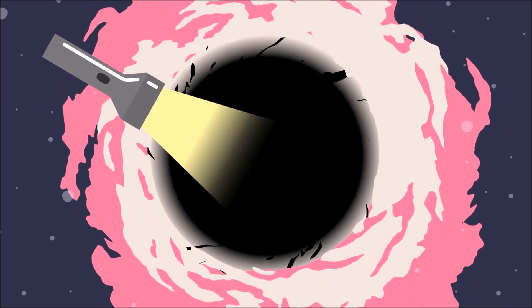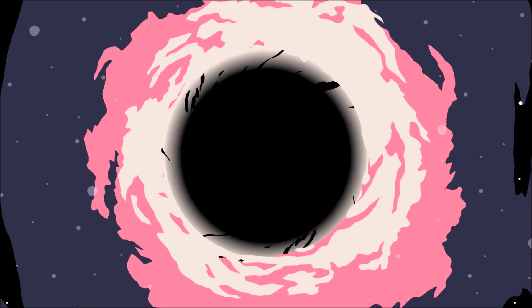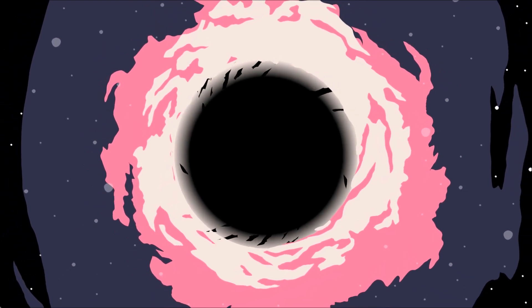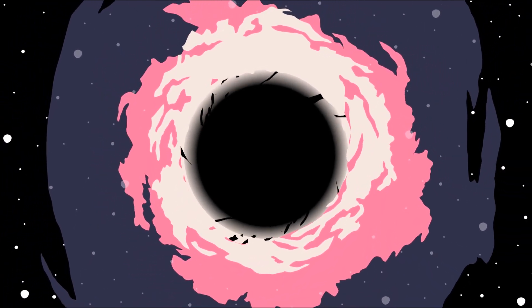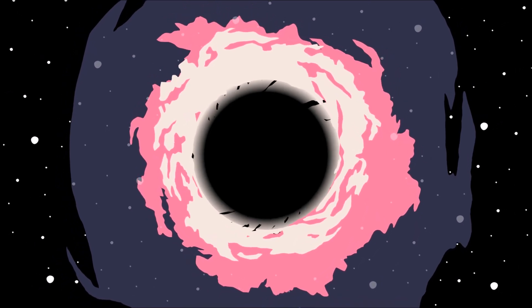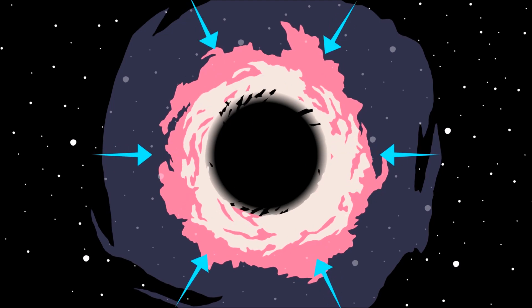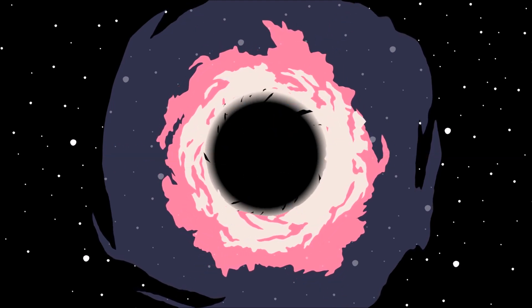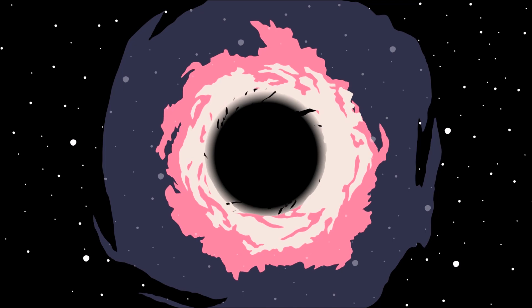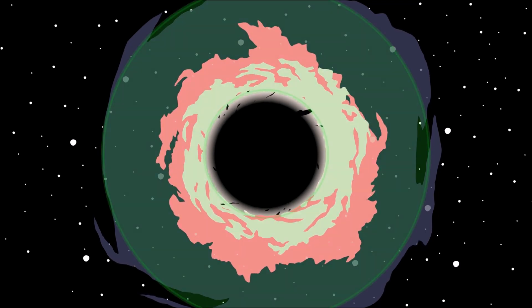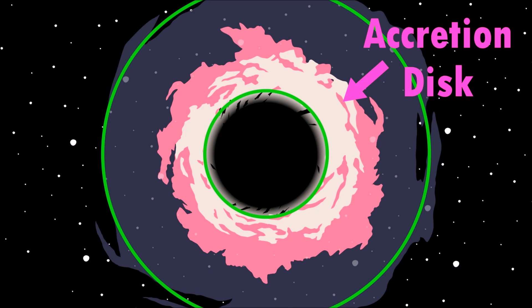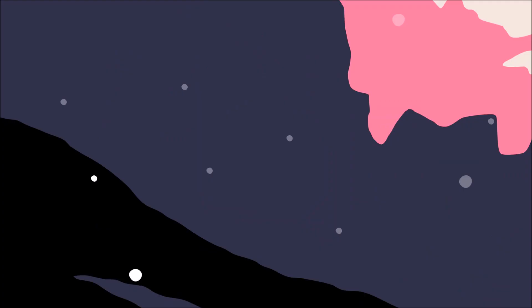Astronomers are able to detect the presence of a black hole because of the strange behavior of objects nearby. The strong gravitational pull from the center of the black hole draws gas, dust, and other materials towards it and forms an accretion disk. The materials inside the accretion disk heat up as they spiral towards the event horizon.